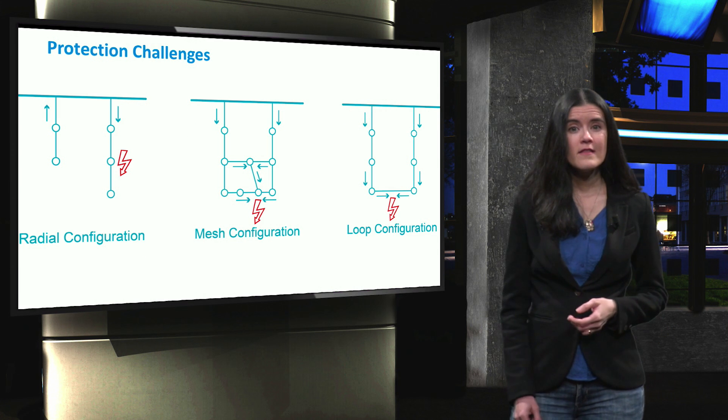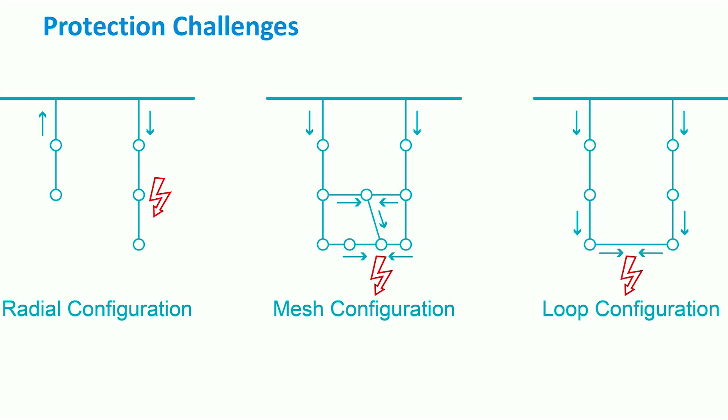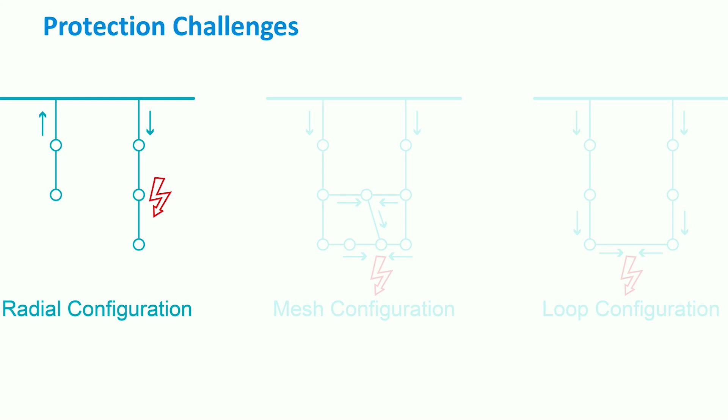Finally, the network configuration is also a challenge in microgrid protection. As we have seen previously, the network configuration of a microgrid may change greatly depending on the connection points of the various distributed generators, storage units and loads. This is opposed to traditional distribution networks, where the lines are mostly operated radially.